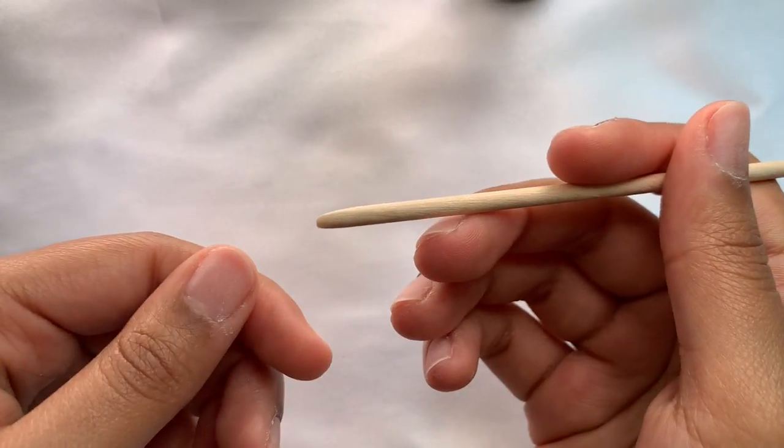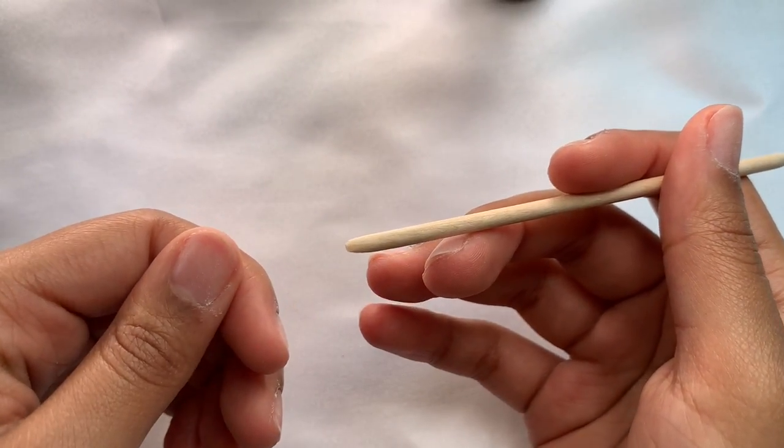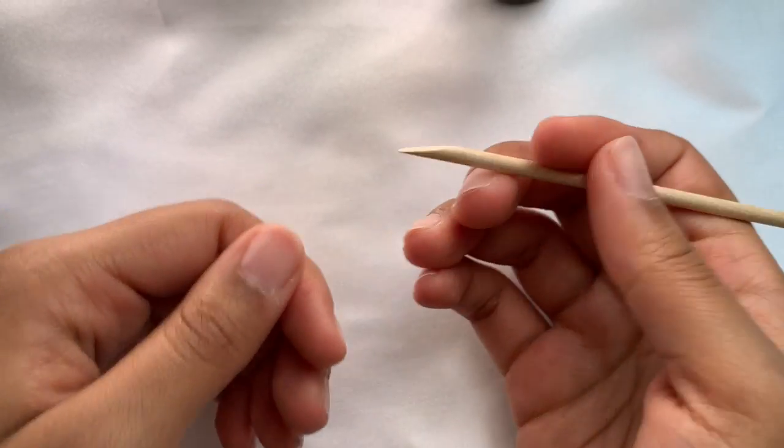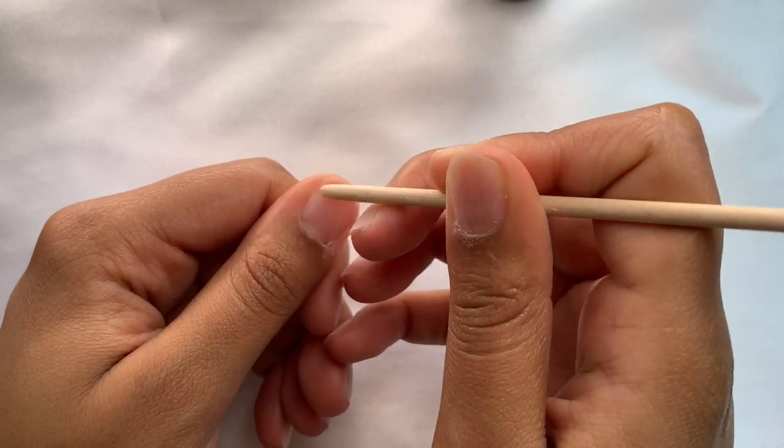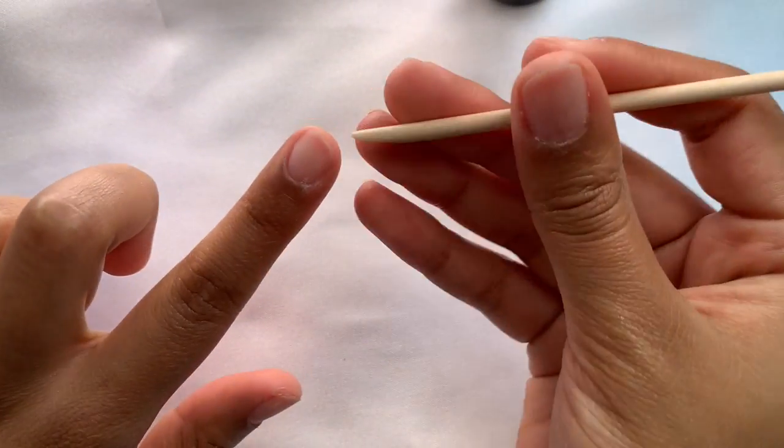This next step is pretty optional, but I think it helps make the nails look way more natural. So I like to take my cuticle stick and just push my cuticles back so that when I apply my press ons, it looks like my actual nail that's growing.